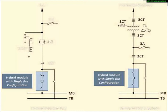We will see how the HIS module reduces space. Here in the blue rectangle box, we can see two disconnector and earthing switches and one circuit breaker. These whole components can be replaced by a single HIS module, which reduces the space requirement.